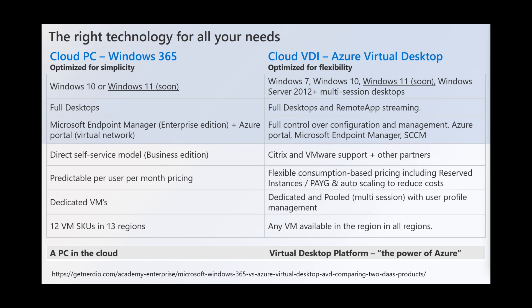With AVD, user profiles are managed separately from the virtual machine, so a user can log into any VM on any given day from any pool. Cloud PC is currently restricted to 12 VM SKUs across those 13 regions, whereas AVD supports basically any VM available across all Azure regions. The clue is in the name: Cloud PC is a PC that just happens to be in the cloud, whereas AVD is your virtual desktop platform — your VDI service — baked on top of the power of Azure.